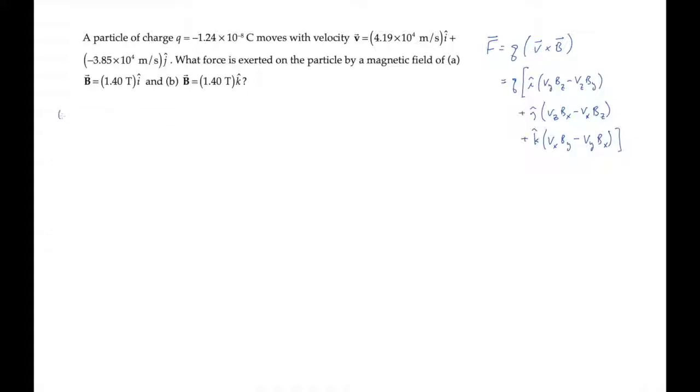The velocity in this problem is in the xy plane so I'll zero out the z components of the velocity. And in part A the magnetic field is in the x direction so I'll zero out the y and the z components of the magnetic field.